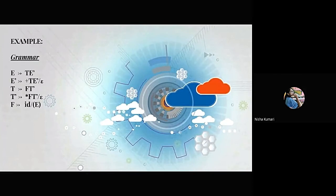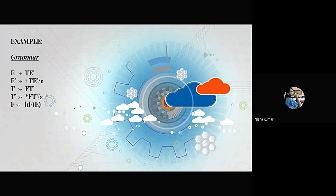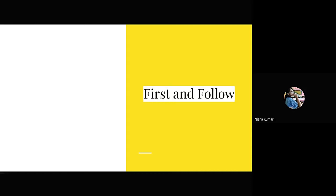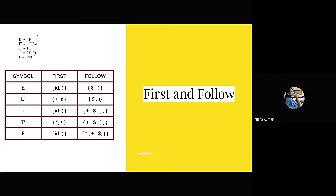Now we will see an example and find out the First and Follow sets as well as the LL1 parsing table of the given grammar. The grammar is: E derives T E-dash; E-dash derives plus T E-dash or epsilon; T derives F T-dash; T-dash derives star F T-dash or epsilon; and F derives id or opening bracket E closing bracket. I have already written the grammar and created the First and Follow table, but I will explain how I did that.